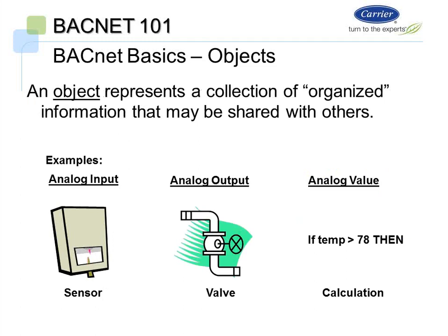The first rule is objects. An object is a representation of a collection of organized information that may be shared on your network — basically a point on your control system. Whether it's a hardwired input or output, or just a specific value like a setpoint or a time, it needs to be mapped as an object. For example, a space sensor would be an analog input object, an output to modulate a valve needs to be mapped as an object, and a calculation like 'if temperature is greater than 78, enable something' also needs to be mapped as an object.